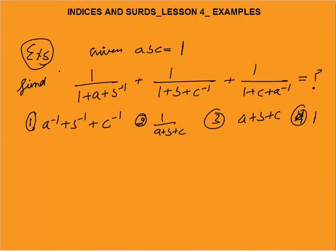The next question: given that abc = 1, find the value of a certain expression. If you try to solve this conceptually — for example, b^(-1) = 1/b, so 1/b = ac — and substitute values of 1/c and 1/a, things get complicated. But this question can be solved in less than 20 seconds in an exam. Let me tell you how.